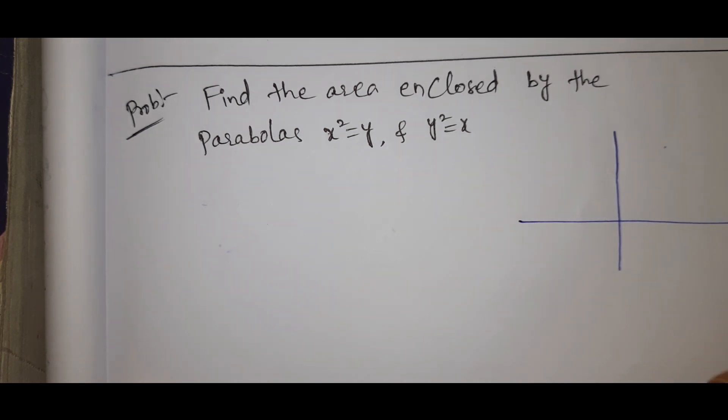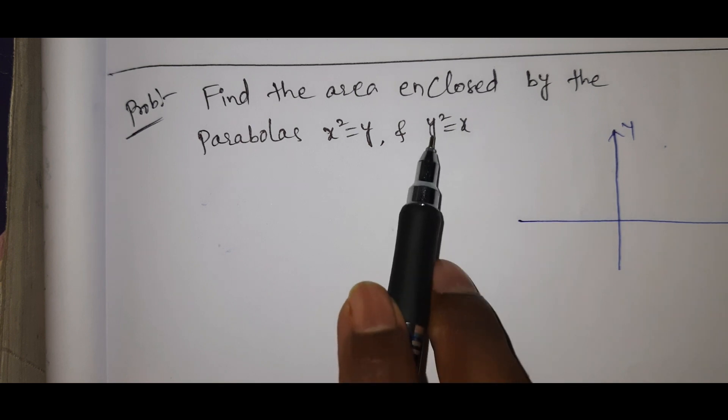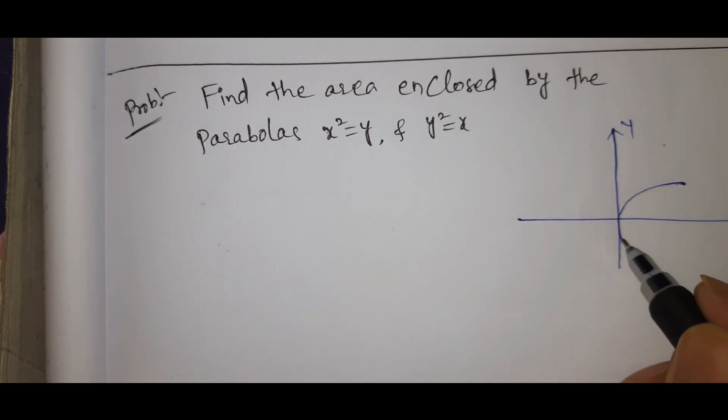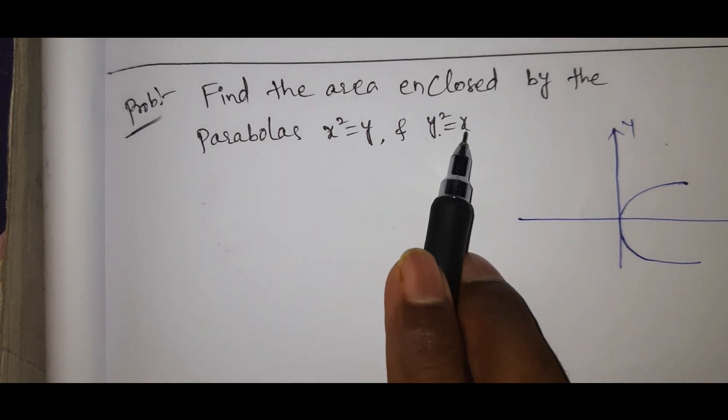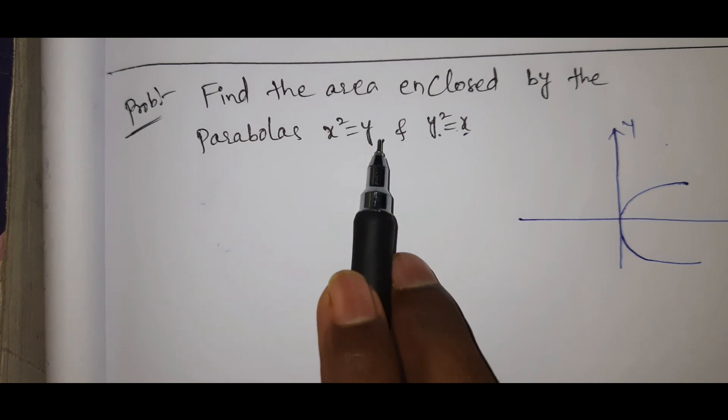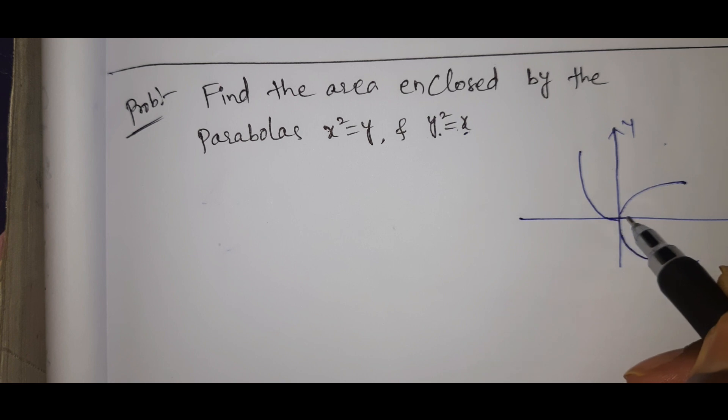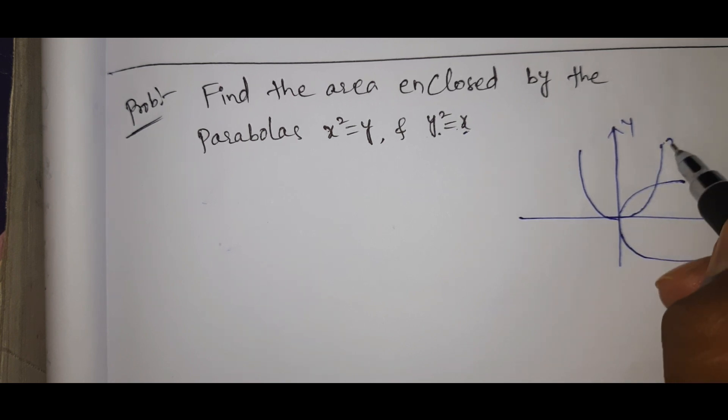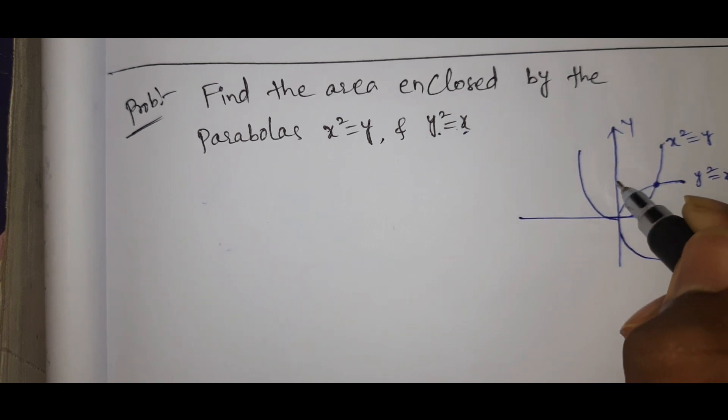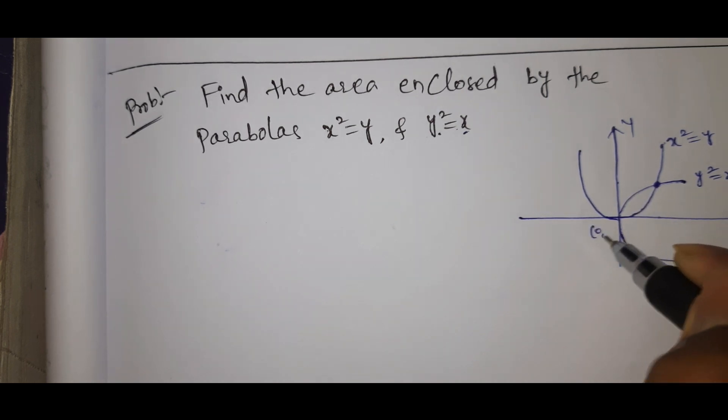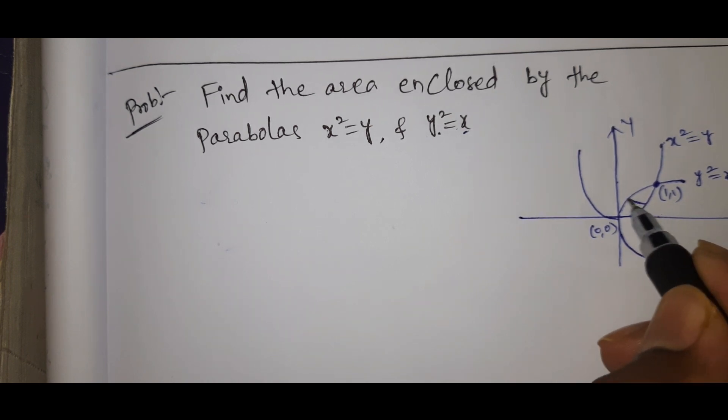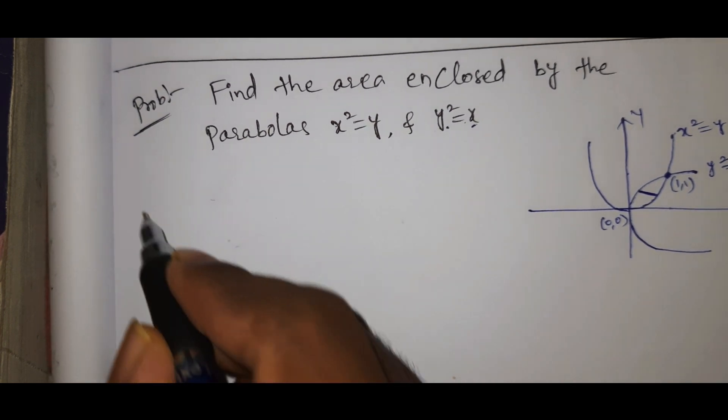Here we draw the parabolas on the x axis and y axis. Y² = x, which is the same form as y² = 4ax. And x² = y. We draw these parabolas on the axis. This is x² = y and y² = x.